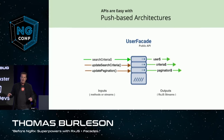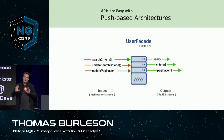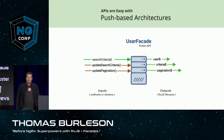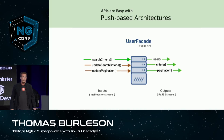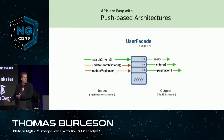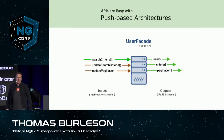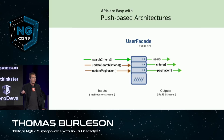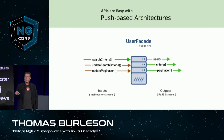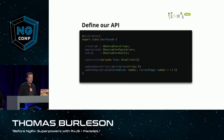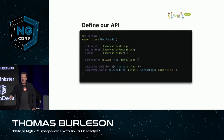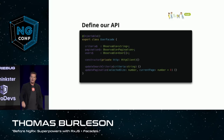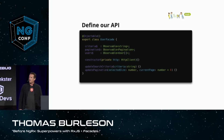This also helps us build our APIs cleanly. Here's our user facade — similar to the user service, but with a clean public API. We have three outputs: all streams — a user stream, a criteria stream, and a pagination stream. We could even define a search criteria stream as an input, meaning streams can come into our services and streams can come out. We have two methods: update search criteria and update pagination. That is our API — and it protects whatever we're doing internally. We inject our HTTP service, and that's it. Pretty cool.